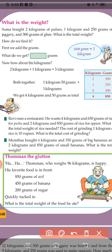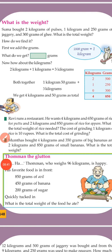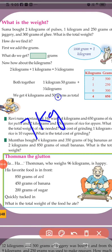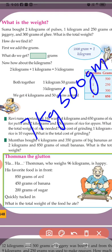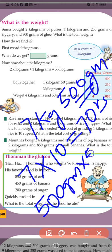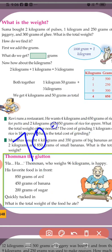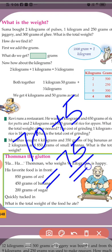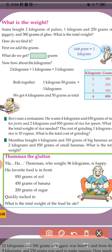Total weight of rice is 7 kg 500 g. The cost of grinding 1 kilogram of rice is 10 rupees. What is the total cost of grinding? So 7 kilograms at 10 rupees each is 7 × 10 = 70 rupees. The remaining 500 grams is half a kilogram, so 500 × 5 = 5 rupees. Total: 70 plus 5 equals 75 rupees.